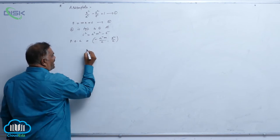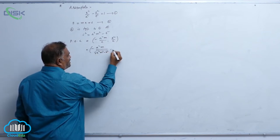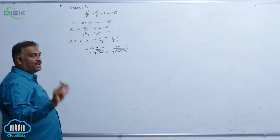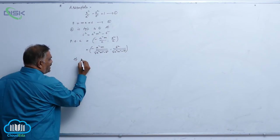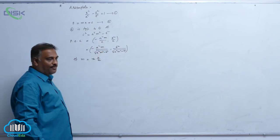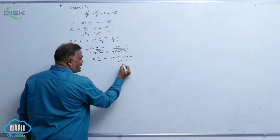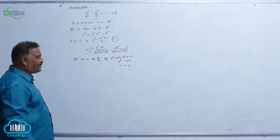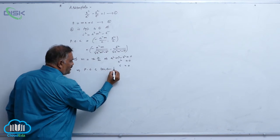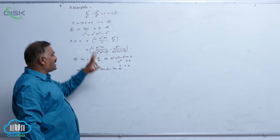Let us write in detail: the point of contact is (−a²m / √(a²m² − b²), b² / √(a²m² − b²)). Now, if m = ±b/a, automatically the denominator becomes 0. This implies a²m² − b² = 0, that is c² = 0, so c = 0. This means the point of contact tends to infinity — basically, this is a tangent stretching the curve at infinity.